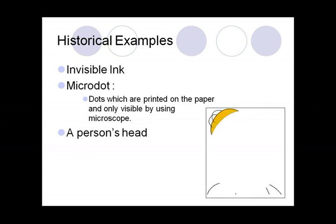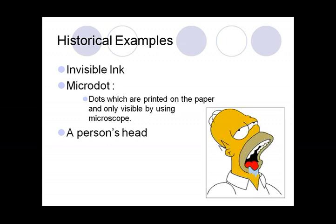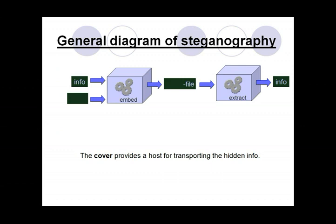Another historical example is a person's head: a message is printed on a person's shaved head — for example, the message '953635' is printed on the person's head — and then the hair is allowed to grow. At the receiver's side, the hair is shaved and the message becomes visible.